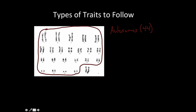The last two chromosomes are sex chromosomes. This is a girl because there are two X's. If it was a boy there'd be an X and a Y, but the last two are always sex chromosomes.